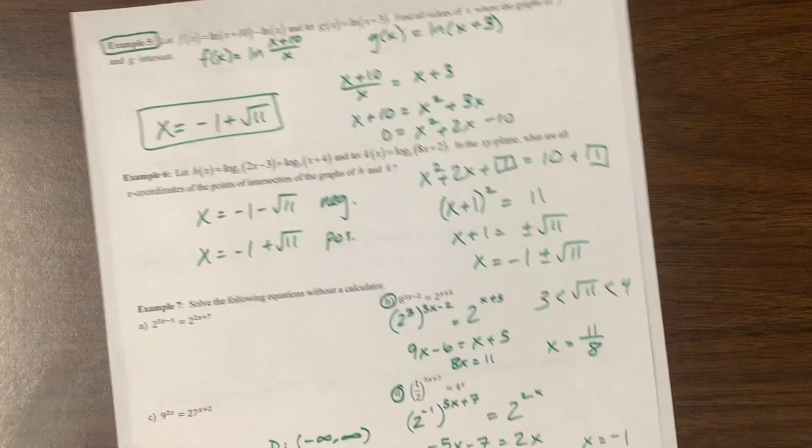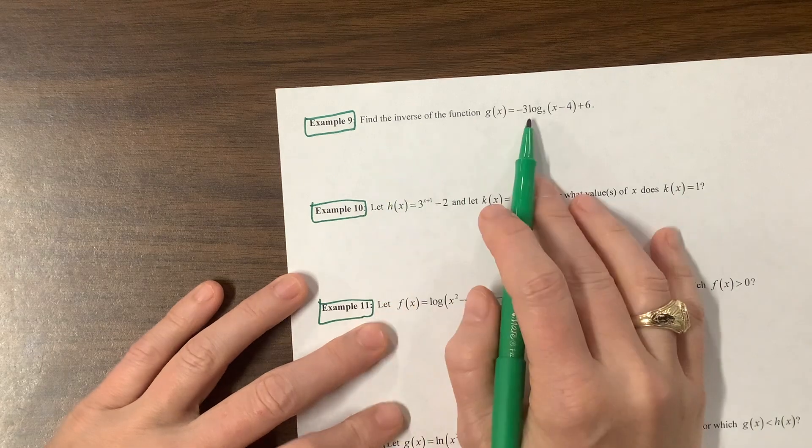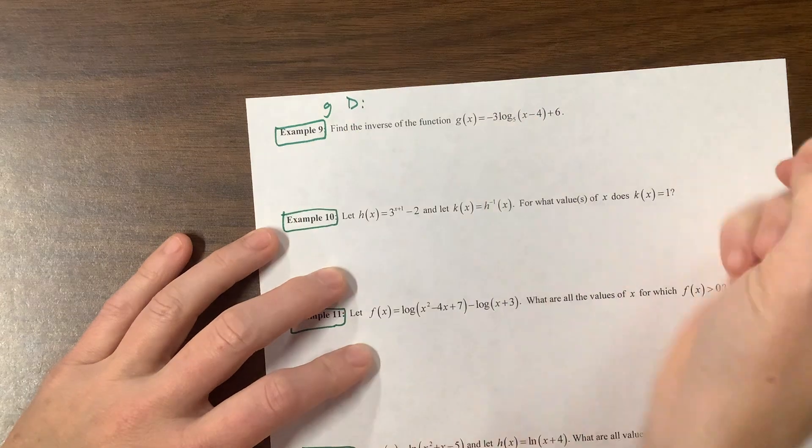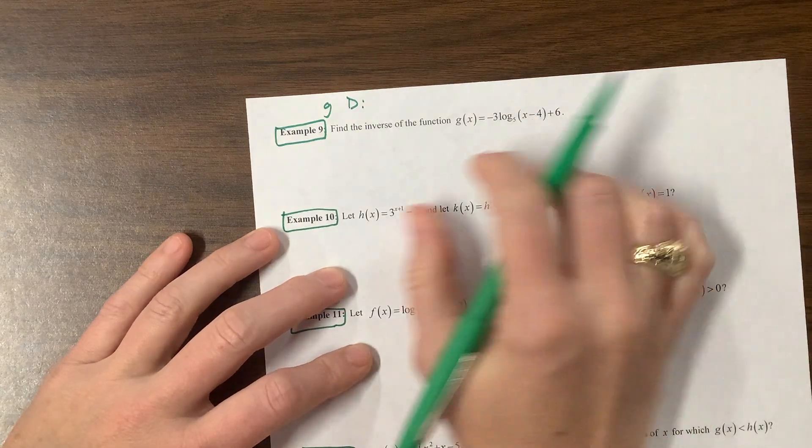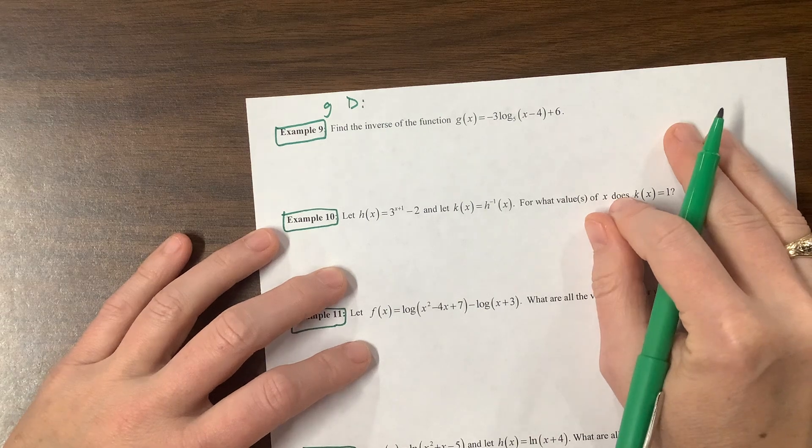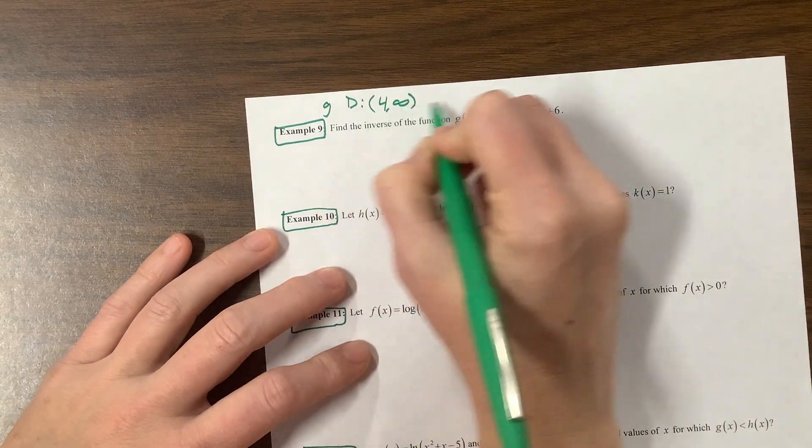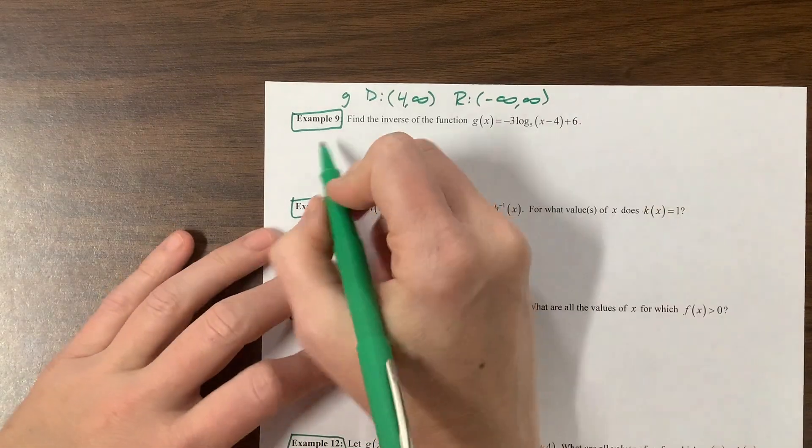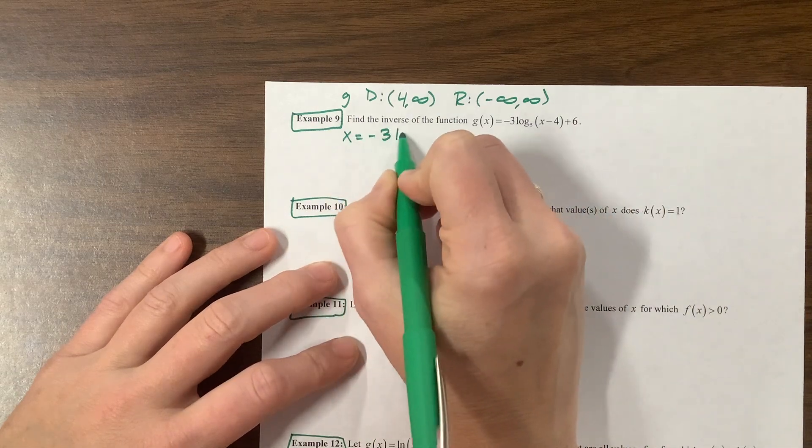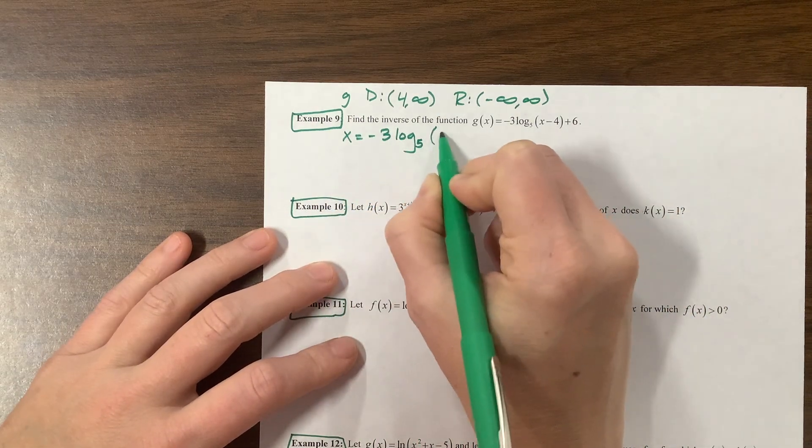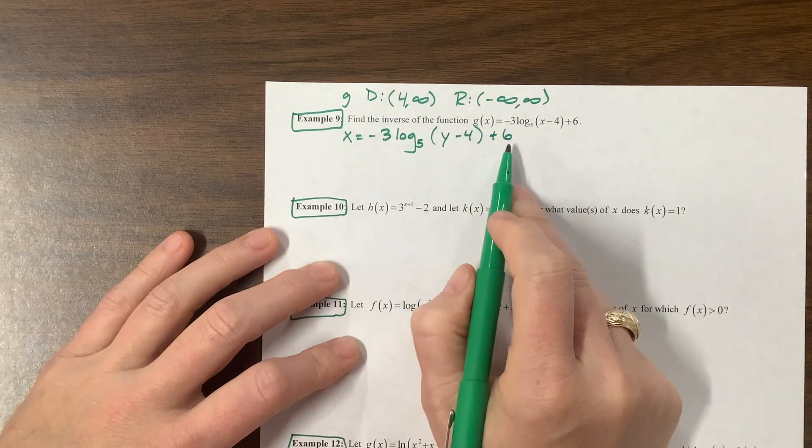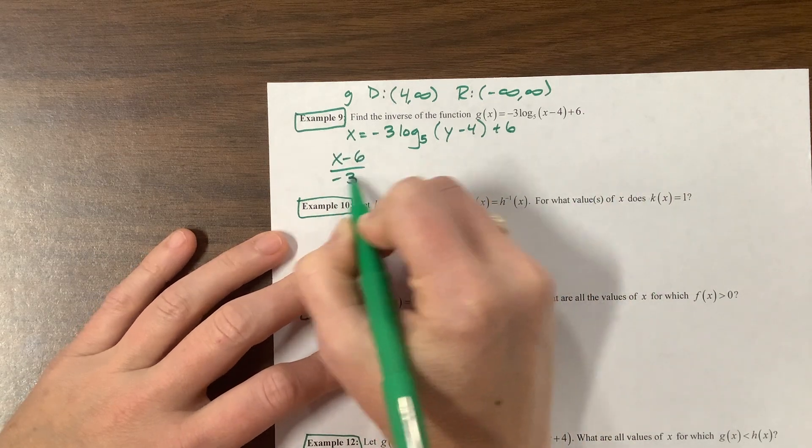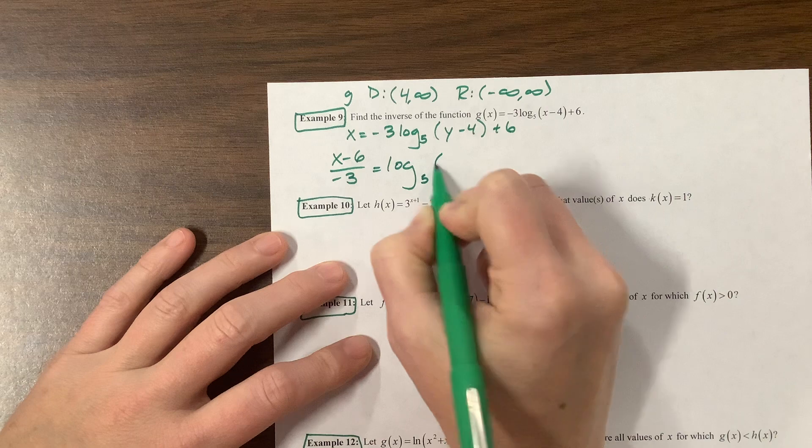The next one, they want us to find the inverse, and now we're starting as a log. G itself has a domain of, well, this is going to shift our graph to the right 4, so we're going to go from 4 to infinity, and our range is negative infinity to positive infinity. I know this wasn't in the question they asked, but we're fine. So now let's see. So x is equal to negative 3 log base 5 of y minus 4 plus 6. I'm going to subtract 6 divided by negative 3. So x minus 6 over a negative 3 is equal to log base 5 of y minus 4.